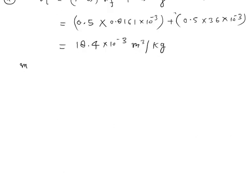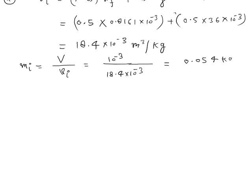The initial mass will be equal to the volume of the can V divided by the initial specific volume. The volume is 1 liter (10⁻³ m³) and V_initial is 18.4 × 10⁻³ m³/kg, so the initial mass equals 0.054 kg.